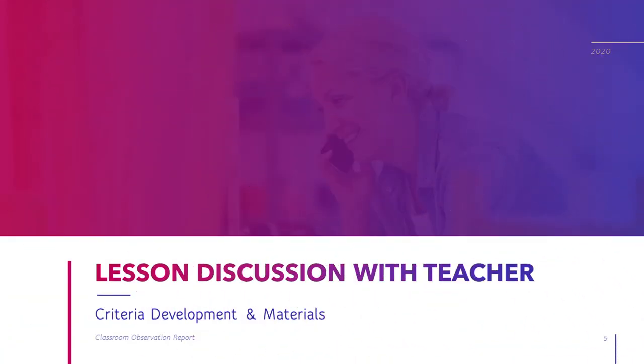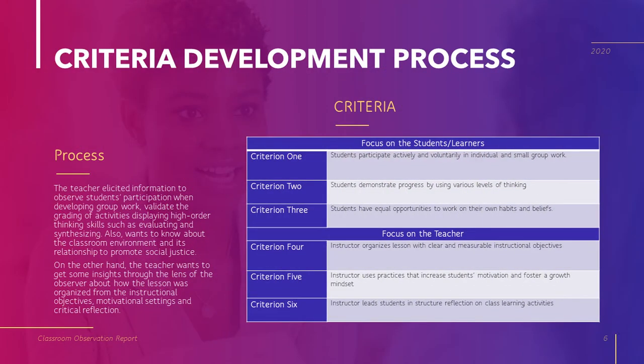Lesson Discussion with the Teacher: Criteria Development Process. The teacher elicited information to observe students' participation when developing group work, and to validate the grading of activities displaying higher-order thinking skills such as evaluating and synthesizing. She also wanted to know about the classroom environment and its relationship to promoting social justice. Additionally, she sought insights from the observer about how the lesson was organized in terms of instructional objectives, motivational settings, and critical reflection. The criteria developed was focused on the learners.